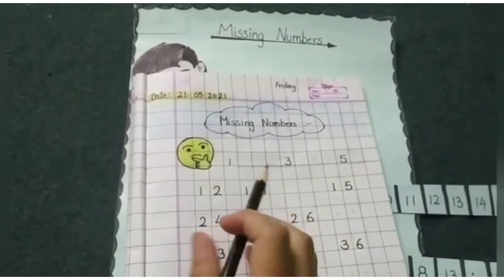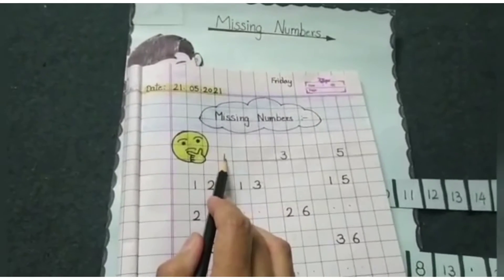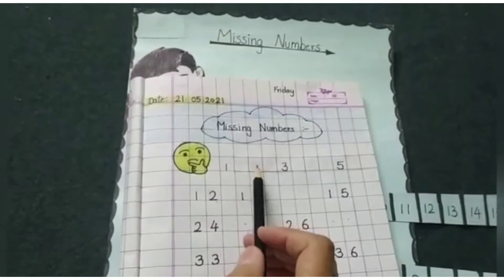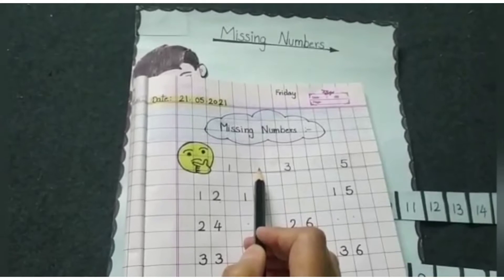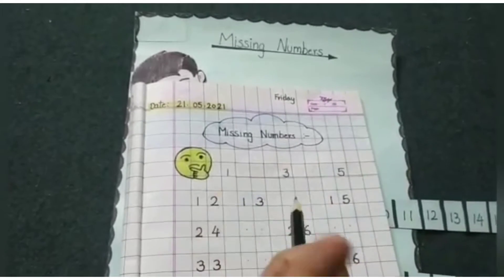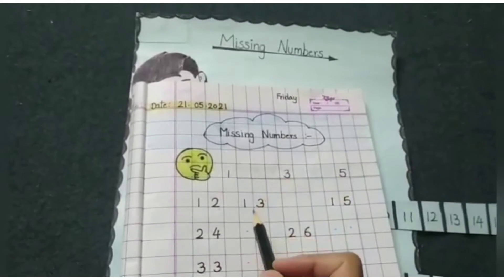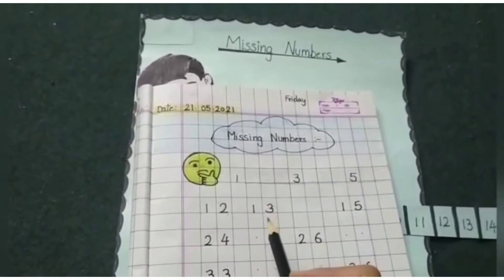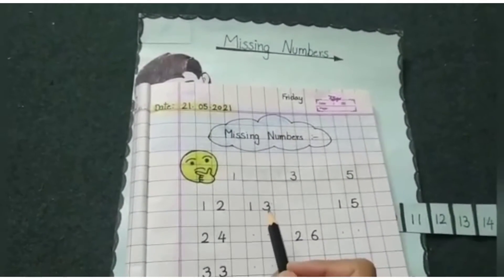So the first number is one. And here the number is missing. There is no number. The block is empty. So let's see which is the missing number.